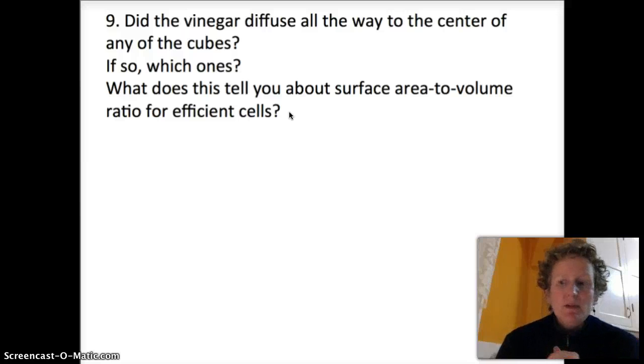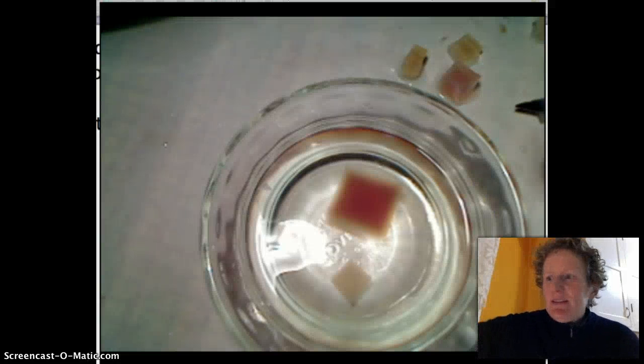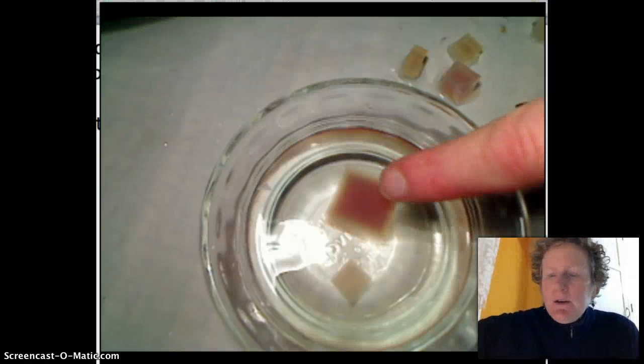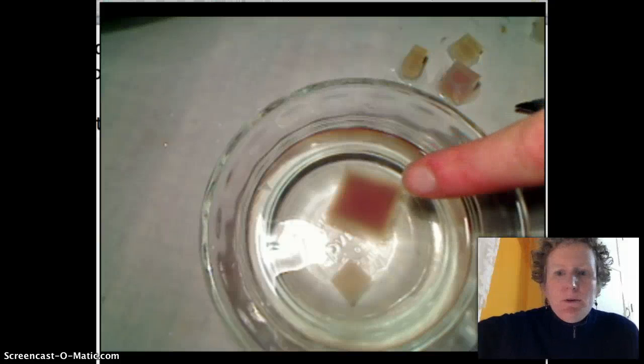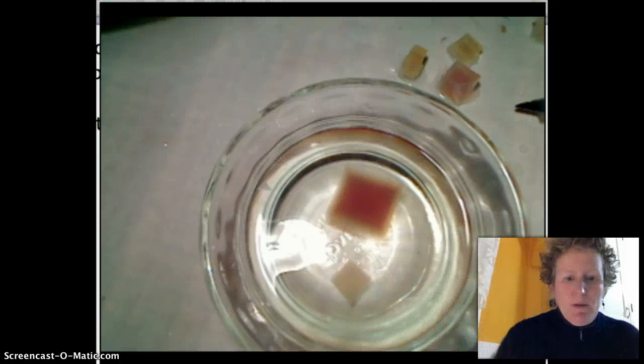So that one liter cell is too big for diffusion to work as passive transport across its membrane. Our little tiny cell will see that the vinegar diffuses all the way through that. It's pretty easy to see in the cubes the vinegar isn't even going to diffuse all the way through the two centimeter cube and it's already all the way through the one centimeter cube.